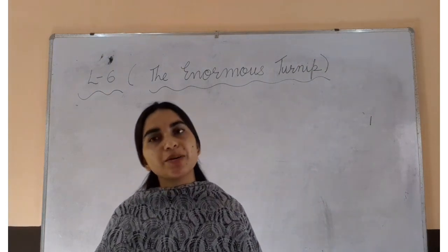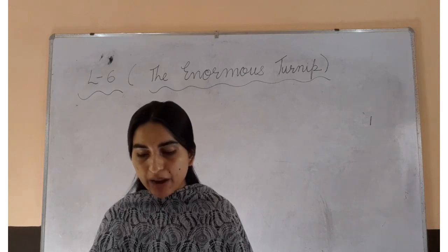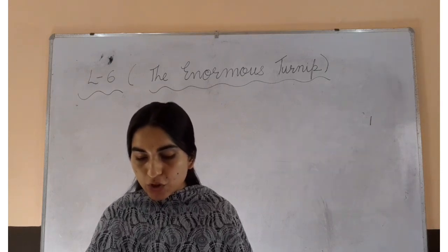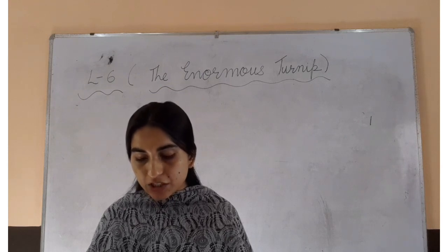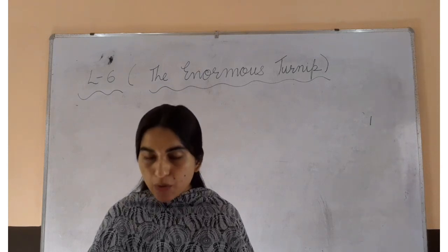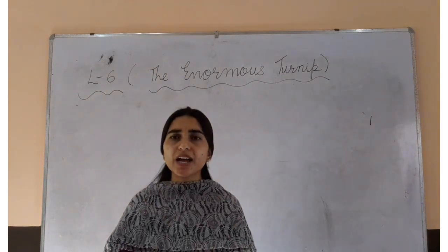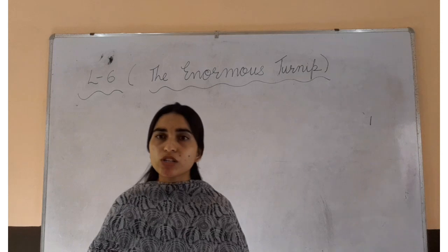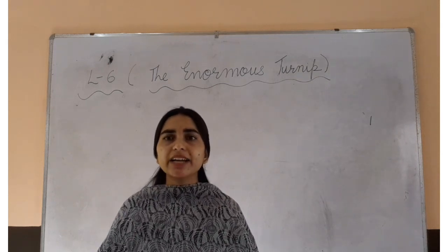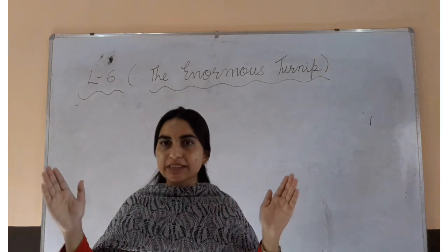We will begin with the poem. Once upon a time, an old man planted some turnip seed. The turnip seeds grew and grew. Once upon a time, one farmer was there. He grew one turnip seed, and that seed grew bigger and bigger.